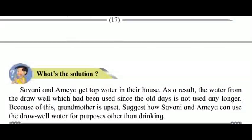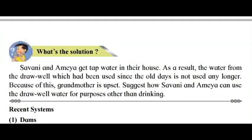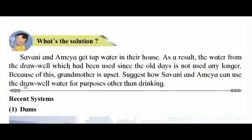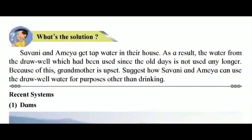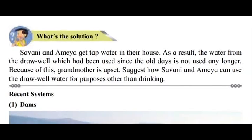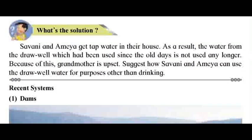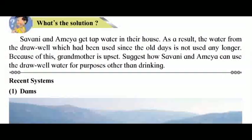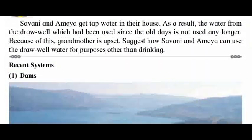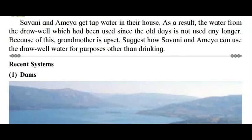A draw well activity: What's the solution? Savni and Amaya get tap water in their house. As a result, the water from the draw well which had been used since the old days is no longer used. Because of this, grandmother is upset. Suggest how Savni and Amaya can use the draw well water for purposes other than drinking.